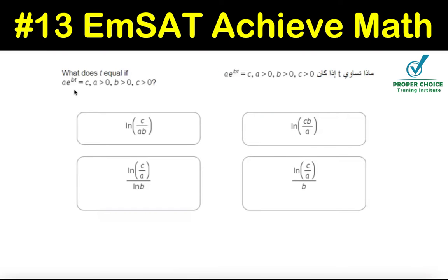What does t equal if a times e to the power bt equals c, provided a, b, c are positive?